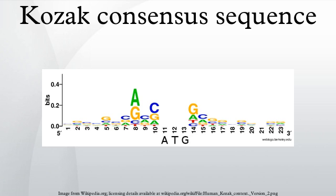The Kozak consensus sequence, also called the Kozak consensus or Kozak sequence, is a sequence which occurs on eukaryotic mRNA and has the consensus (GCC)RCCAUGG. The Kozak consensus sequence plays a major role in the initiation of the translation process. The sequence was named after the person who brought it to prominence, Marilyn Kozak.